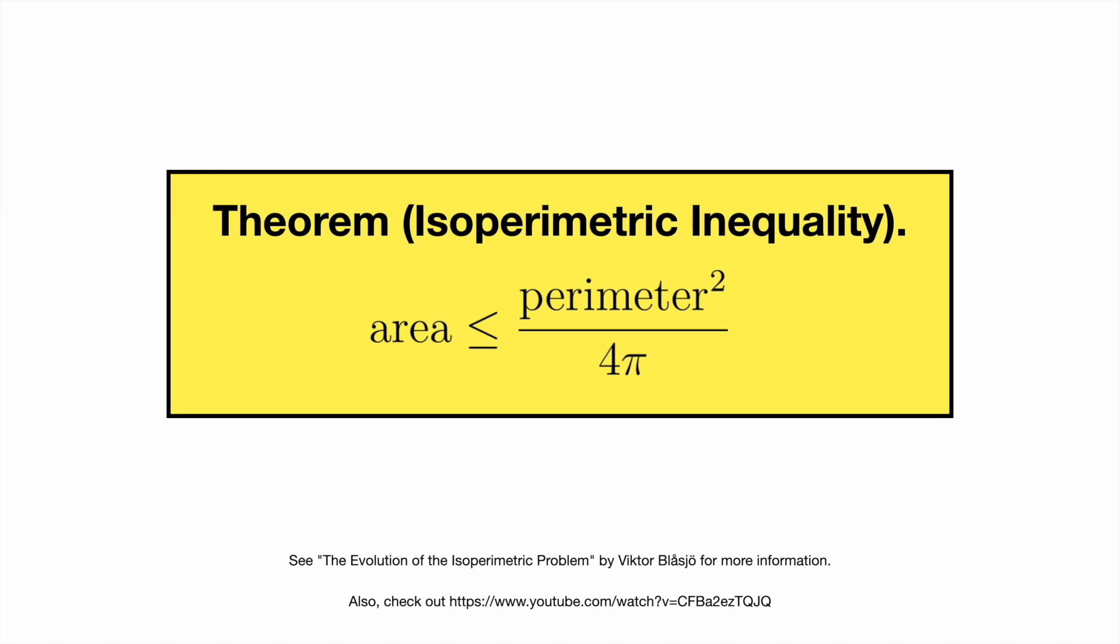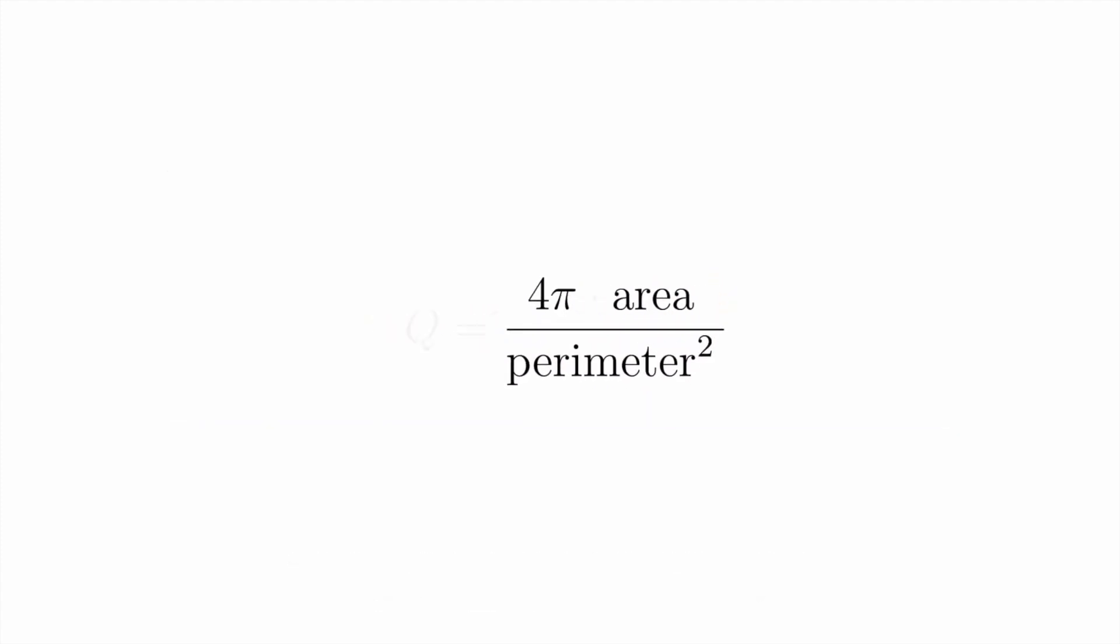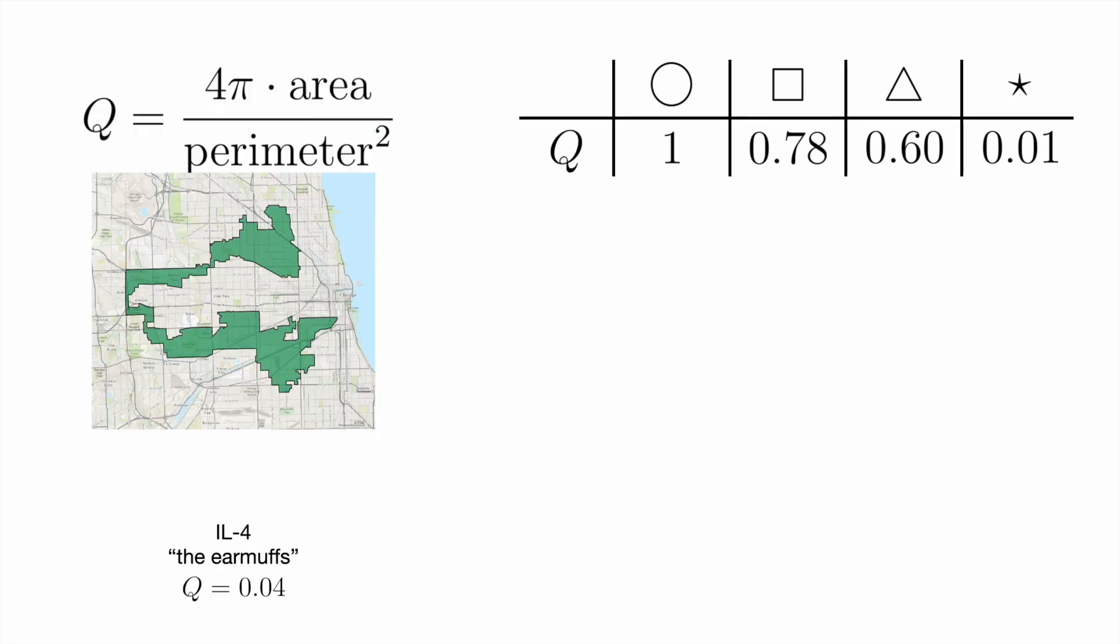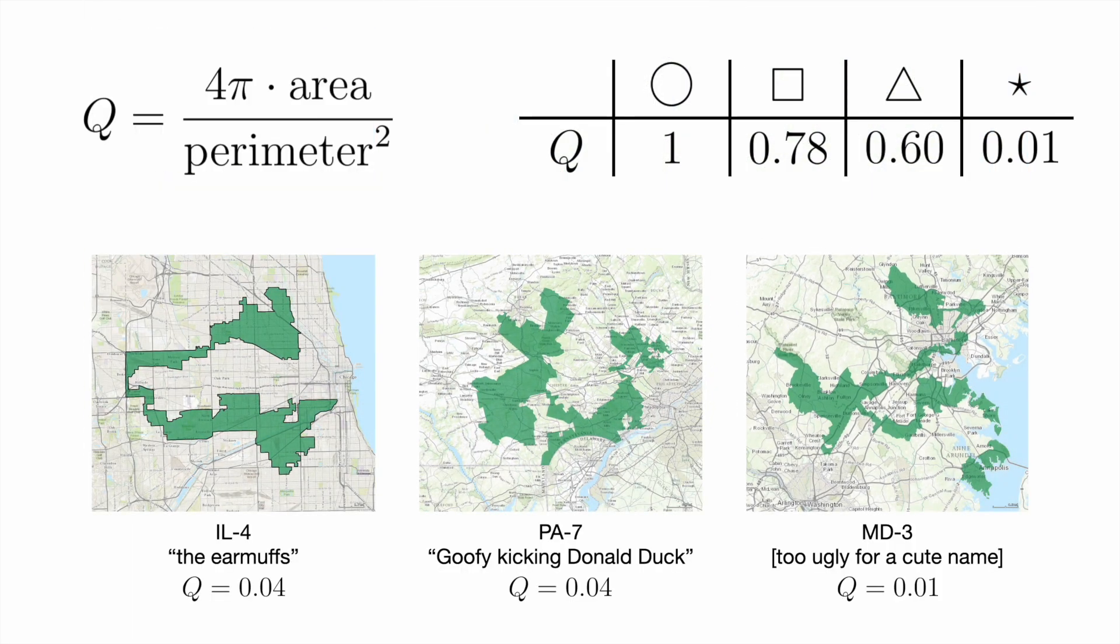Remember, we call a shape strange if it wastes perimeter to contain less area. We can measure strangeness by taking the fraction of area to the isoperimetric upper bound. The smaller the fraction, the stranger the shape. In geometry, this is known as the isoperimetric quotient. But in the context of gerrymandering, it's called the Polsby-Popper score, and it's remarkably tiny for the most famous of strangely shaped districts.